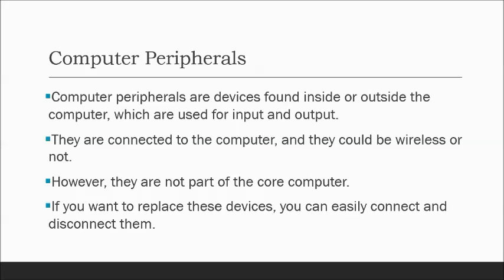Wireless devices can connect via Wi-Fi or via Bluetooth. There are printers that you can print documents to if Bluetooth or Wi-Fi is enabled. If you want to replace these devices you can easily connect and disconnect them. The difference between computer peripherals and core computer parts is that peripherals are not part of the core of the computer.